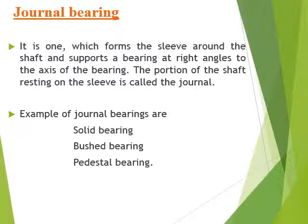A journal is the part of the shaft which supports the bearing at right angles to the axis of the bearing. The portion of the shaft resting on the sleeve is called the journal. Examples of journal bearings include solid, bush, and pedestal bearings.